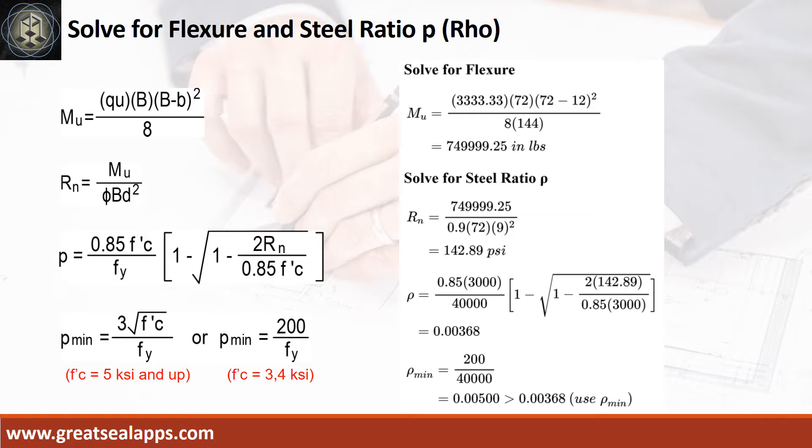Given resistance factor equals 0.9, B equals 72 inches, and D equals 9 inches, the beam design ratio RN equals 142.89 PSI, and reinforcement ratio rho equals 0.00368. Use rho minimum of 0.005.